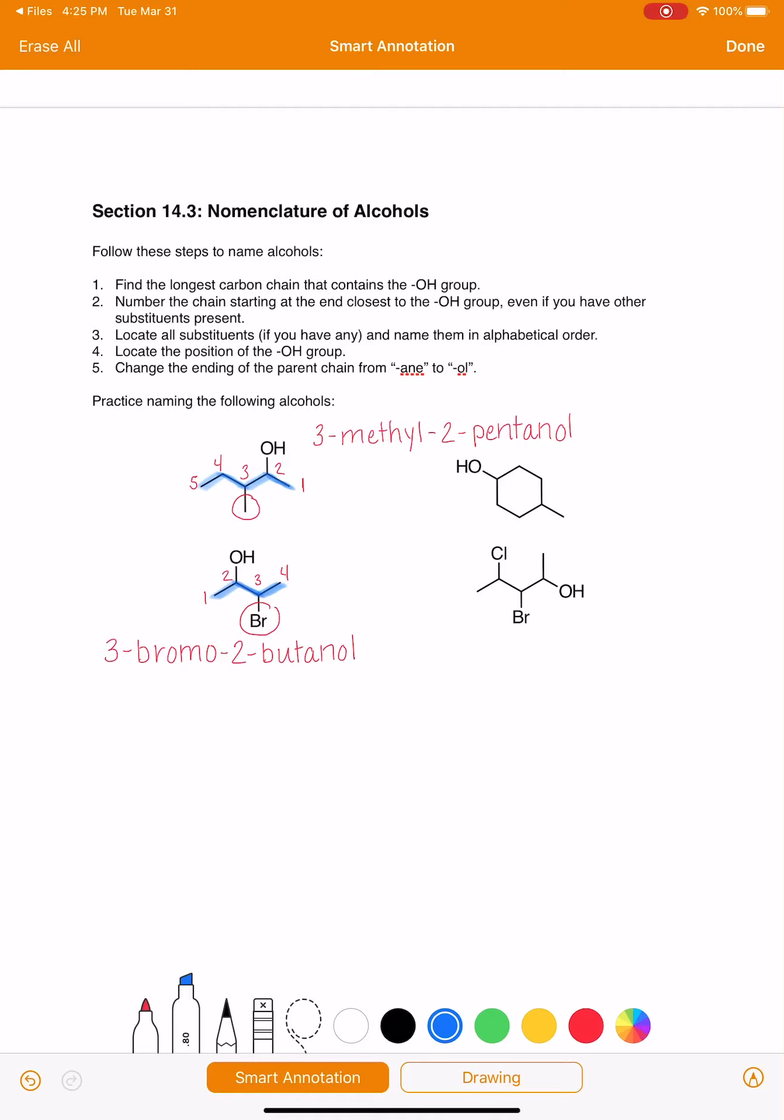Moving on, let's do this cyclic one. We have a six-membered ring, that's our parent chain. When we are numbering cyclics, we will put the alcohol on carbon number one by default. If you look at this molecule, whether we number clockwise or counterclockwise, our substituent is going to end up in the same spot on carbon number four. So we can go either way we want.